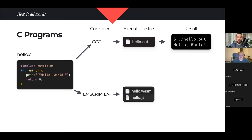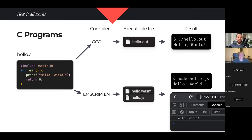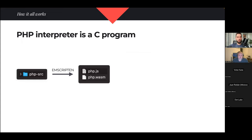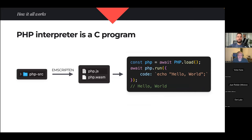That compiler is called Emscripten. When I run it, I get a WebAssembly file and a JavaScript file, and I can execute them anywhere I have JavaScript — in Node.js, in a browser — and it prints 'Hello World' all the same. So I can take a regular program and make it into a JavaScript program. The PHP interpreter is a C program itself, which means I can take PHP source code, use Emscripten to create a WebAssembly program from it, and then execute PHP code in a browser.